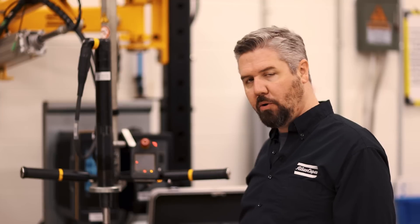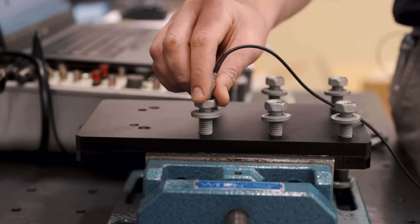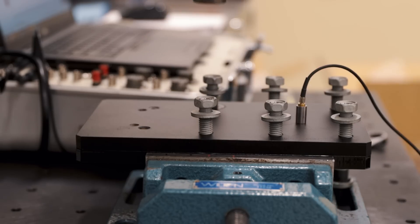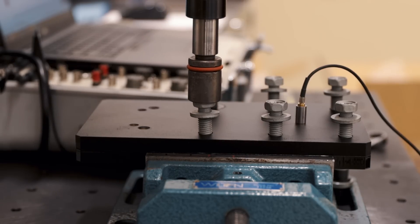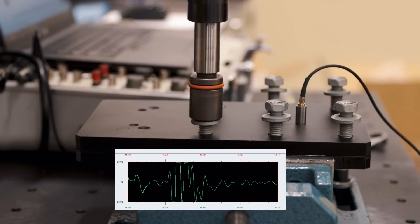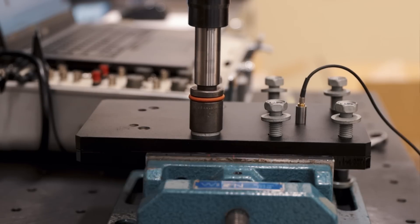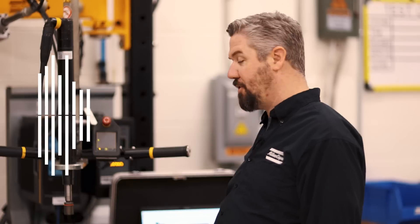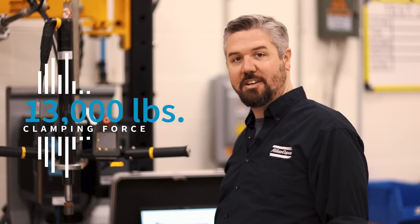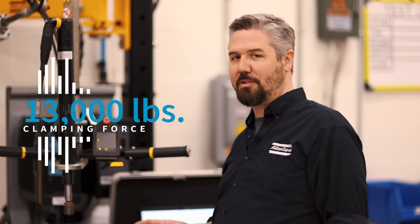All right, so we did our baseline test in normal conditions. We got over 13,000 pounds of clamping force. Let's see what happens when we introduce some contaminants that you might find around the factory, maybe during break time.